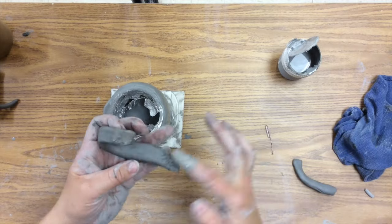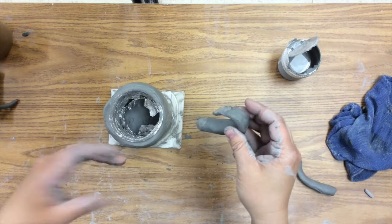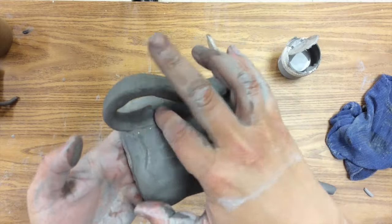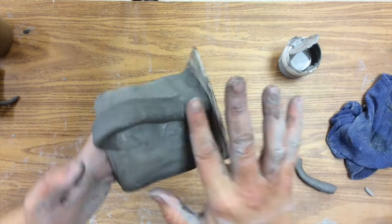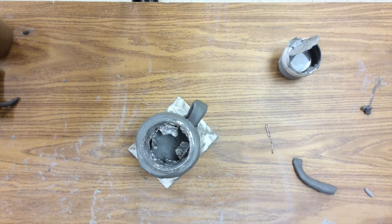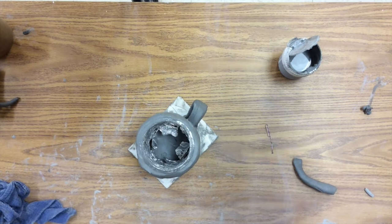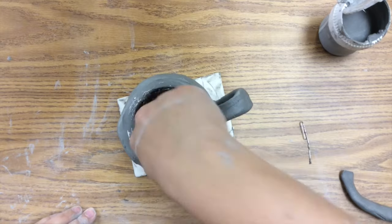Put a little slip in both places, push it on, smooth it out, and make sure you smooth it out. Otherwise it will fall off. I'm going to smooth that out both for your knuckles when you hold it and so that it won't fall off.